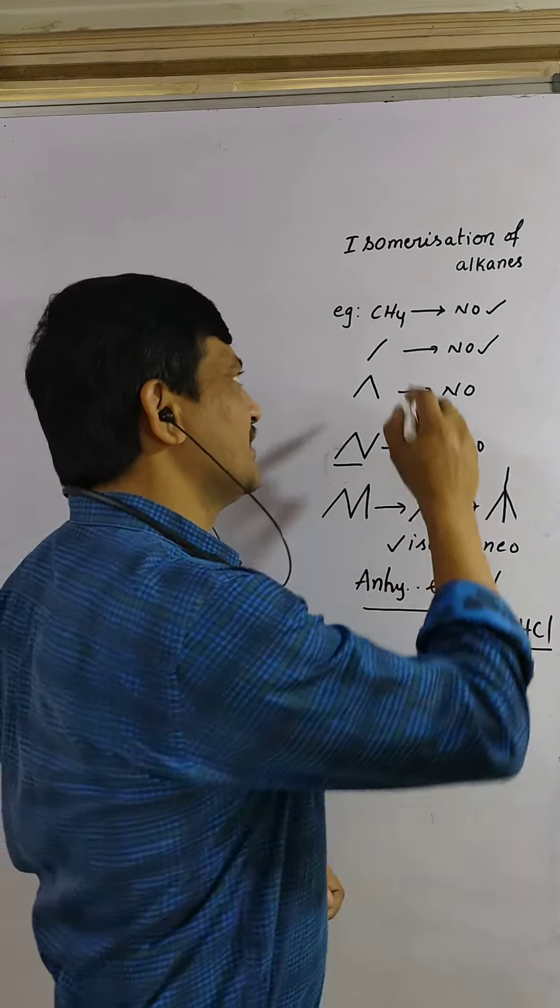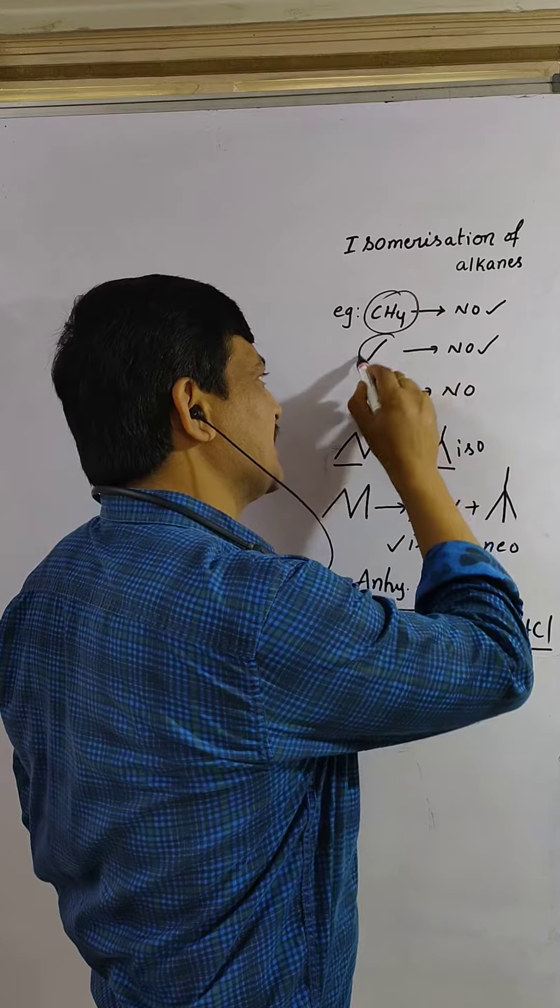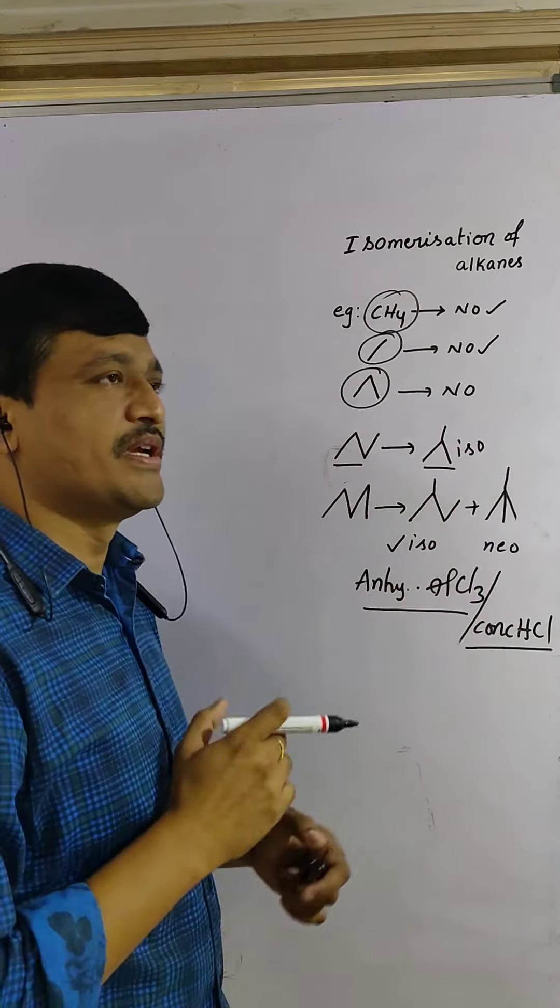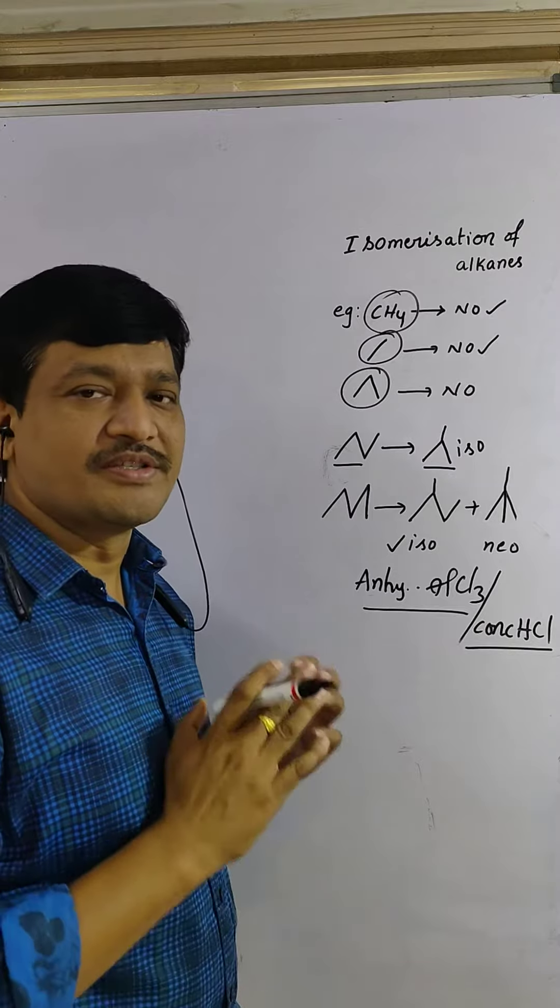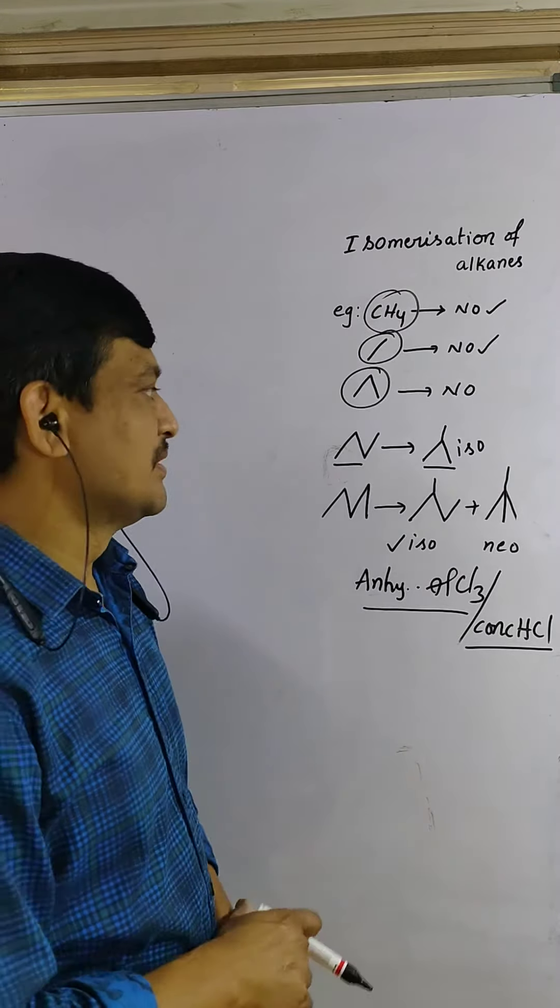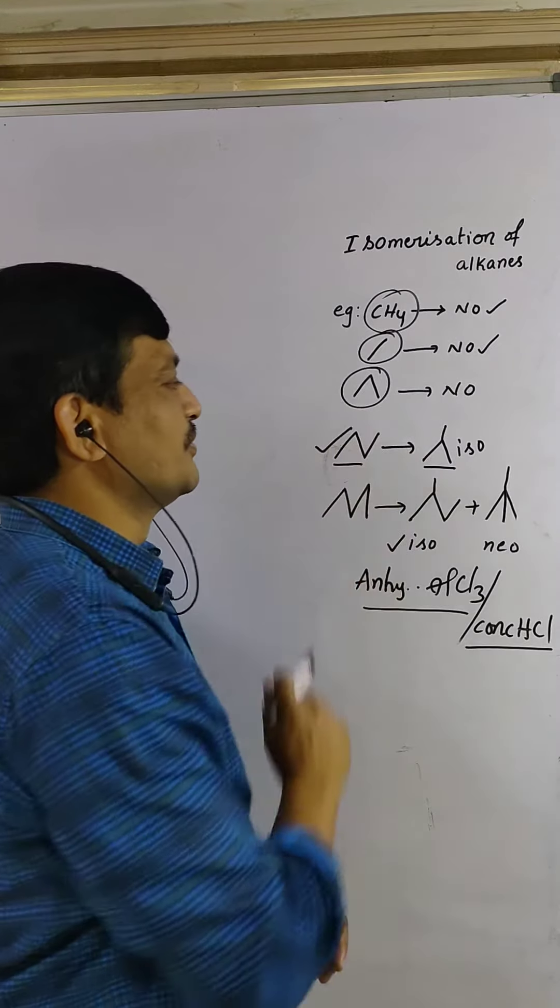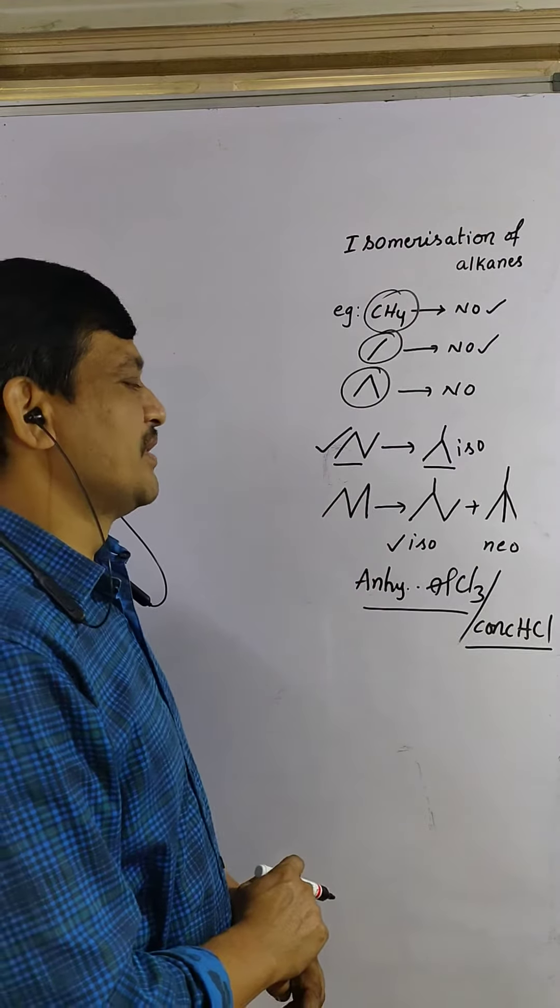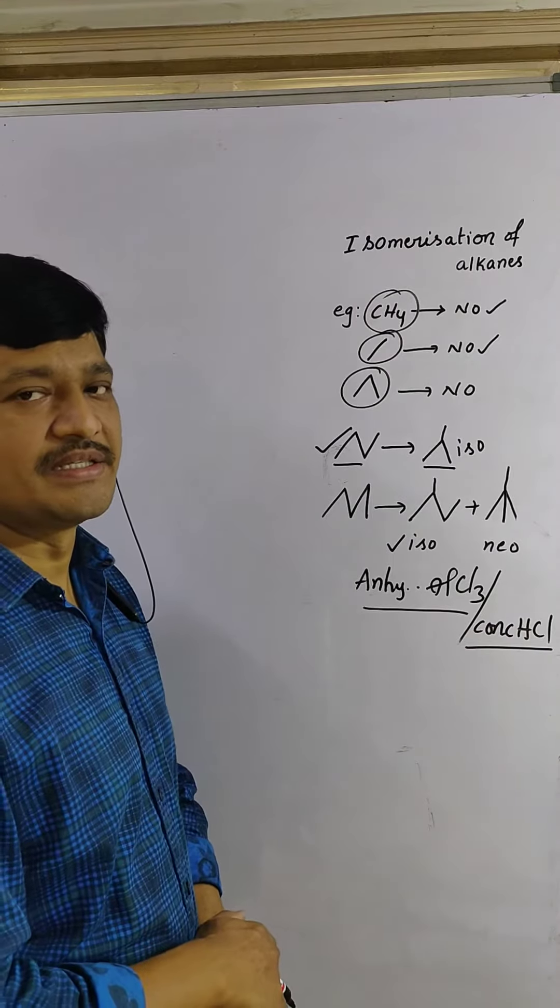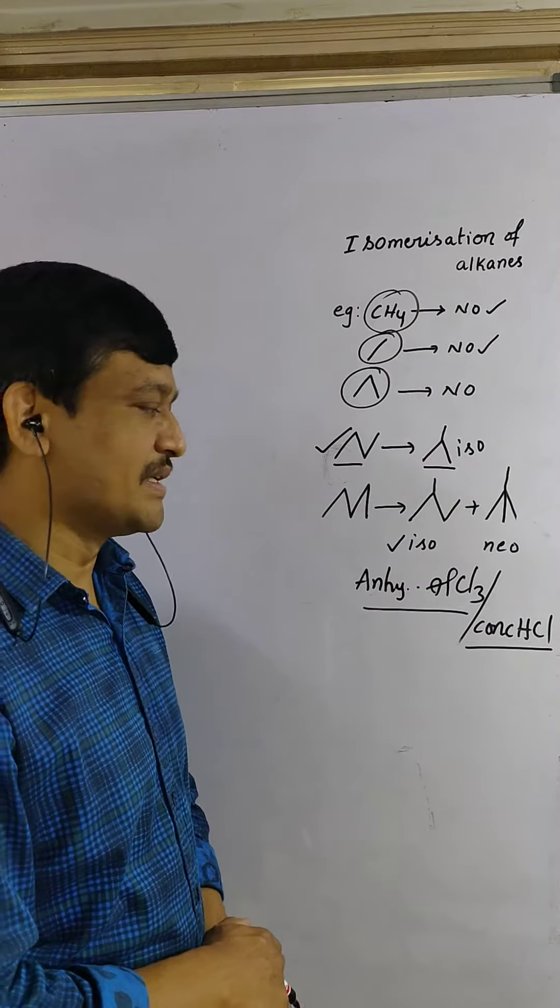Methane, ethane, propane - not possible to convert to any isomers. They do not have any isomers, that's why they don't convert. Butane converts to isobutane in presence of anhydrous AlCl3 and concentrated HCl.